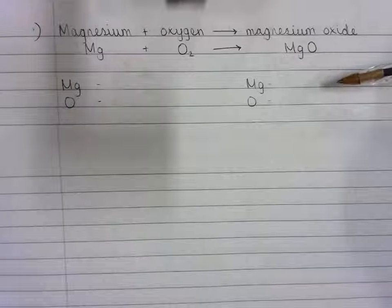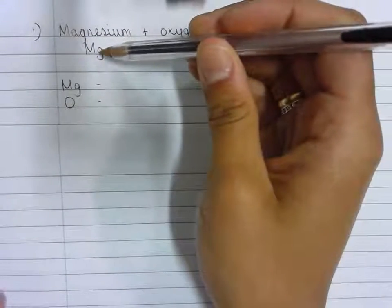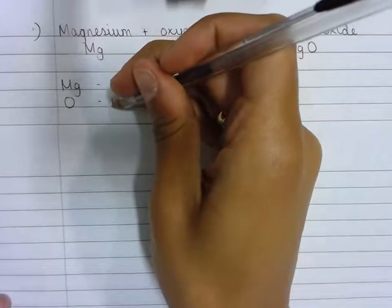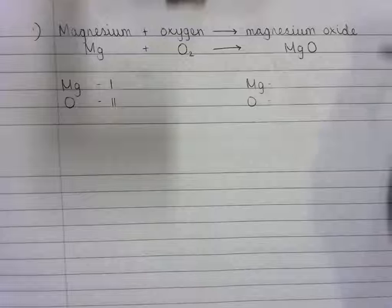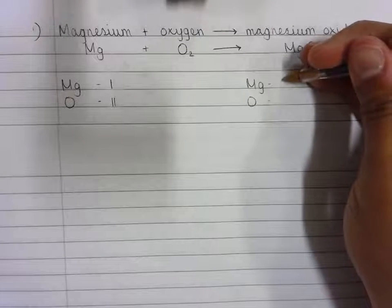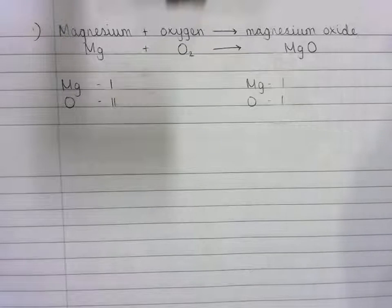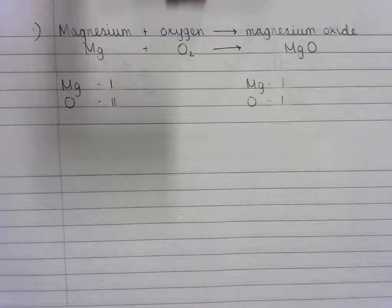Now I need to tally the number of atoms of each element that react on the reactant and product side in pen. There is one magnesium atom and there are two oxygen atoms on the reactant side. There is one magnesium atom and there is also one oxygen atom on the product side. Now put your pen down and ask: is it balanced?